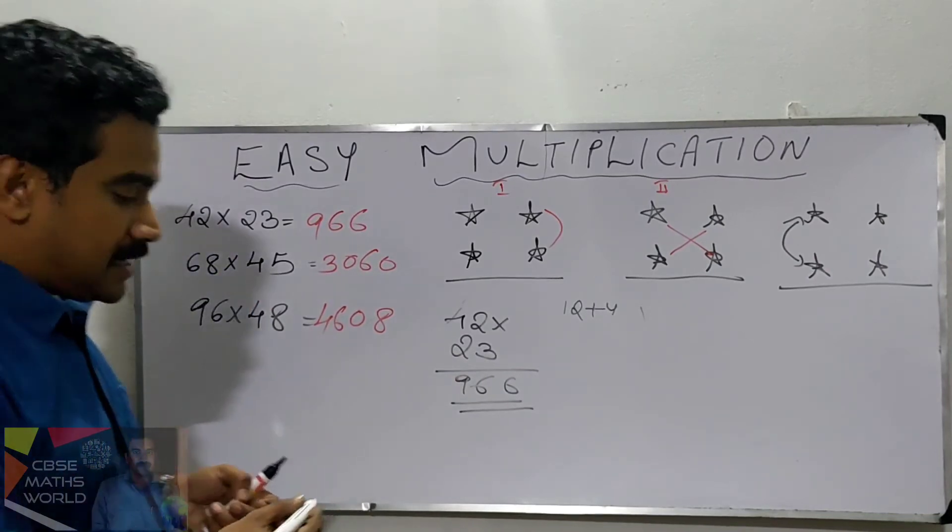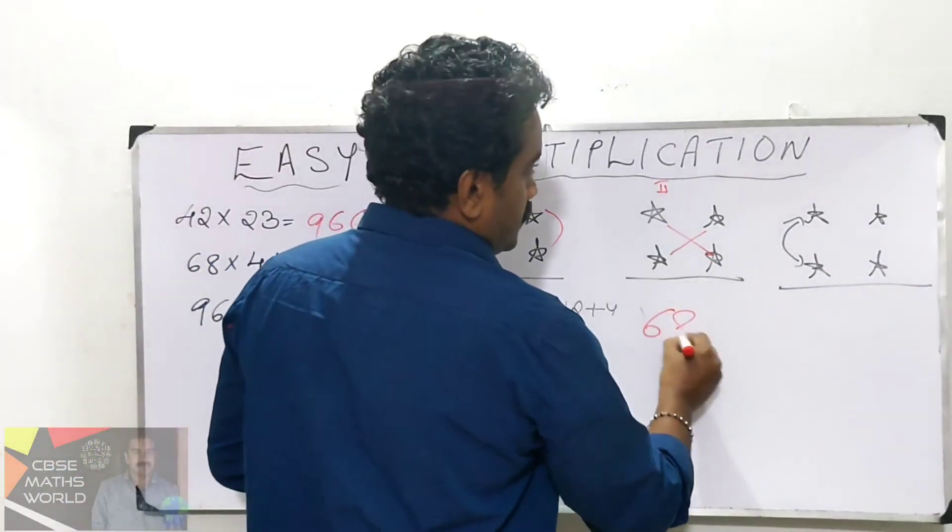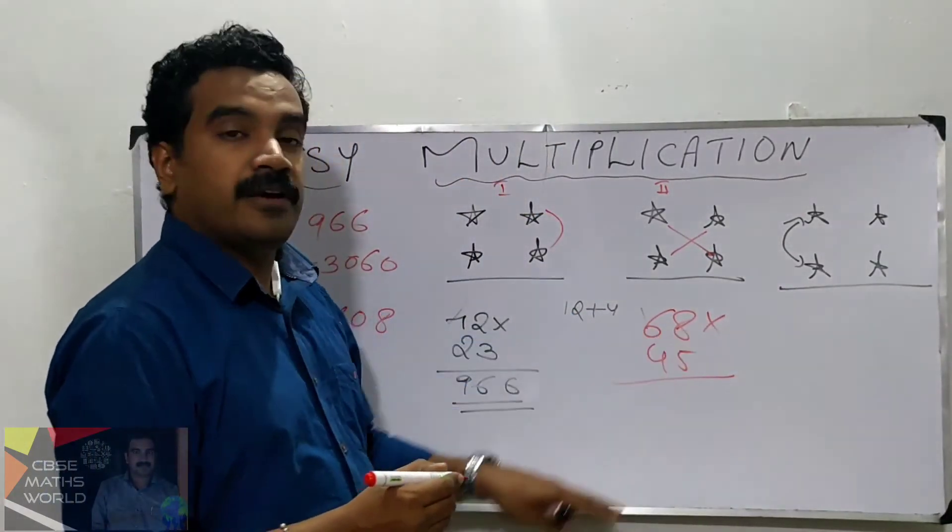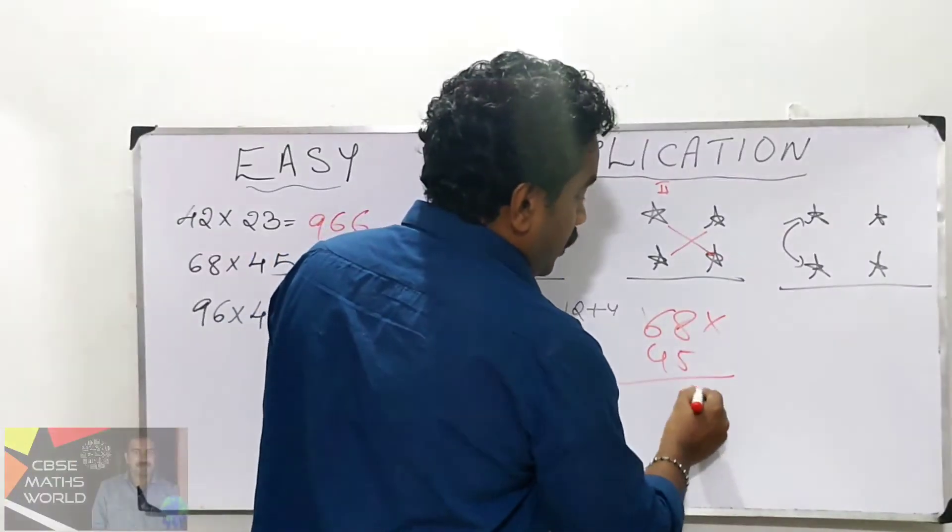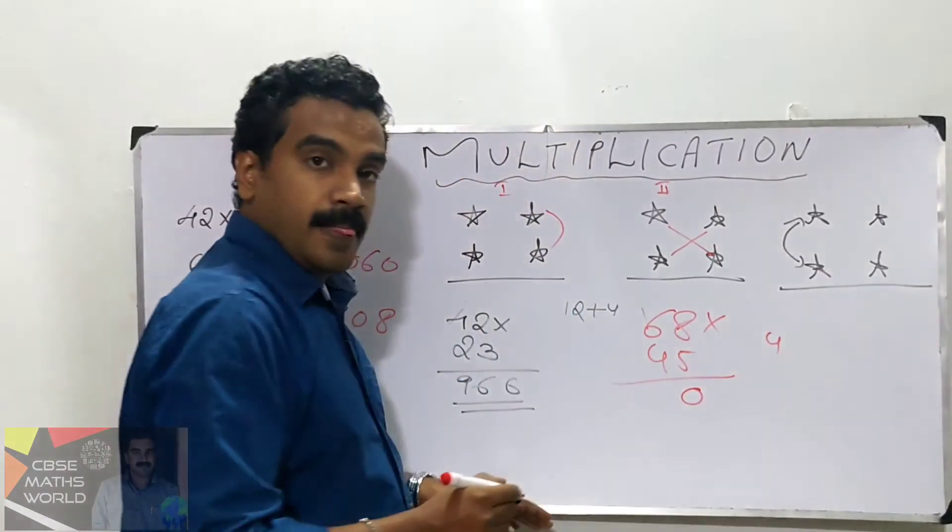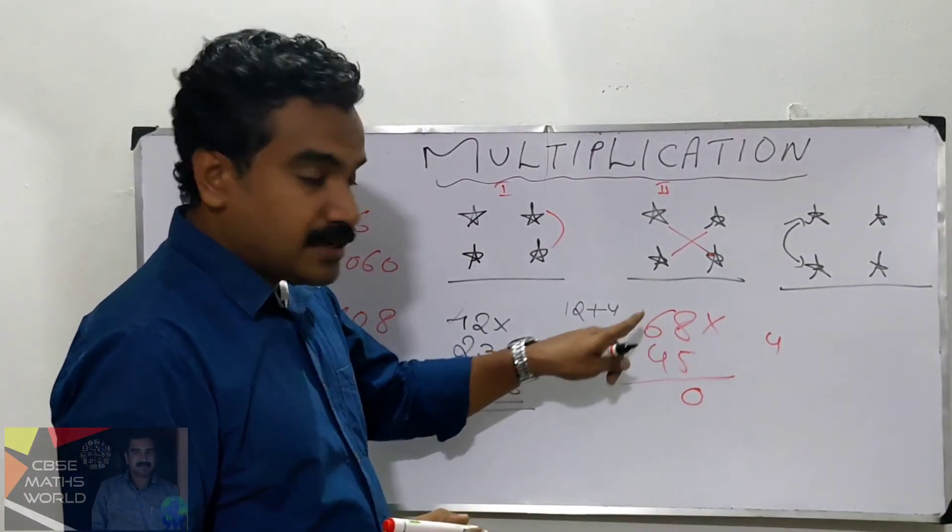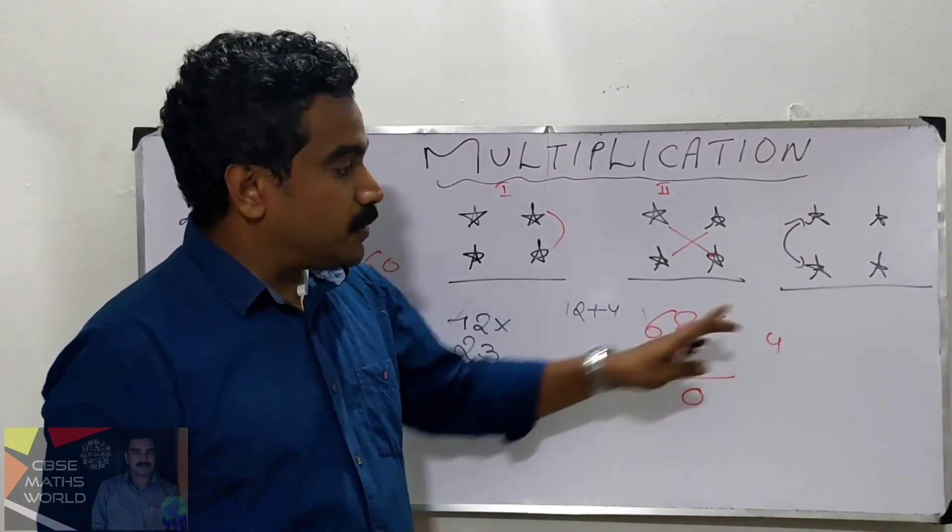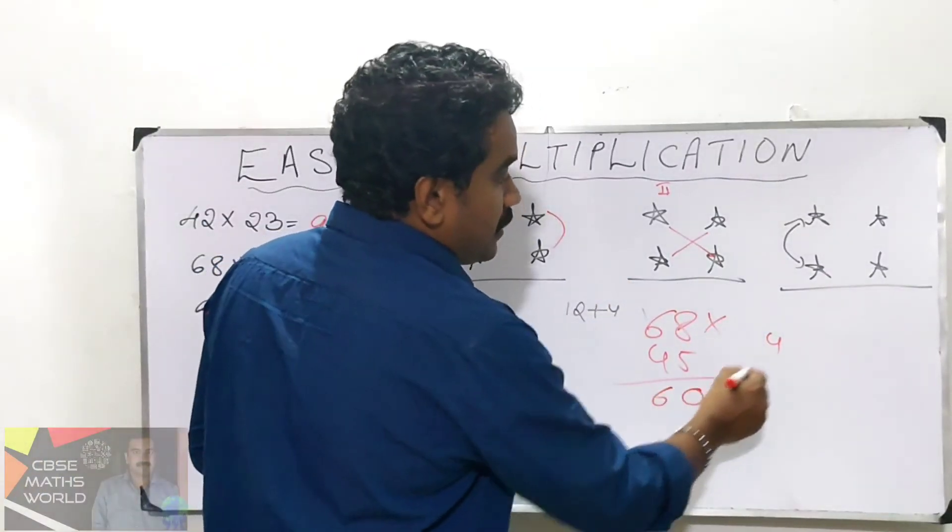Look at the second question: 68 into 45. First multiply these two: 8 into 5 is 40. Balance 4. Then cross multiplication: 5 into 6 is 30, 8 into 4 is 32. 32 plus 30 is 62. 62 plus 4 is 66. You will get 6, and you can take the carry 6 here.